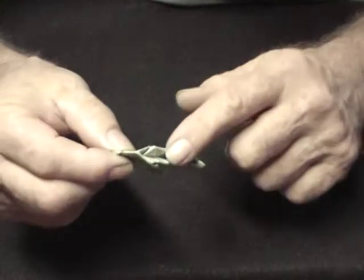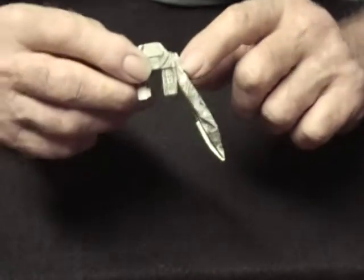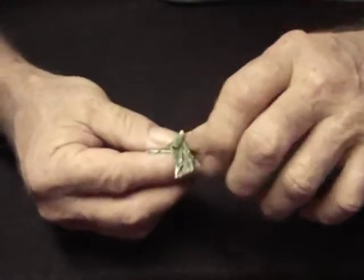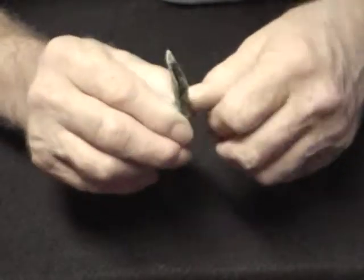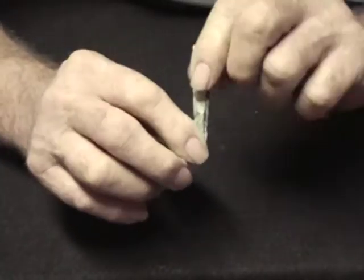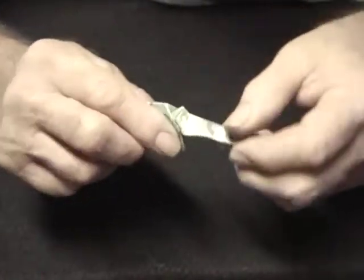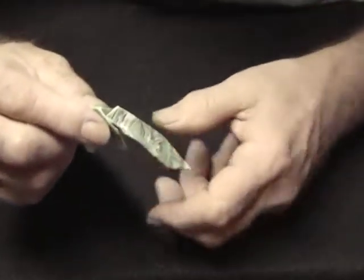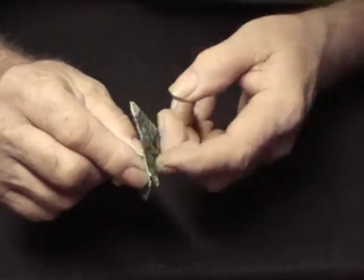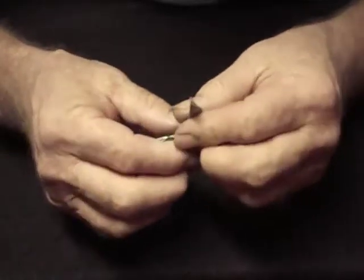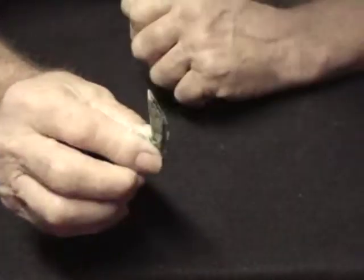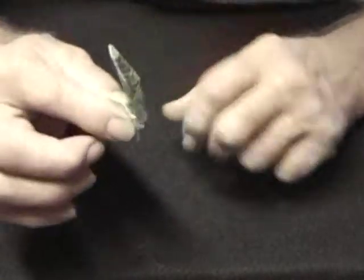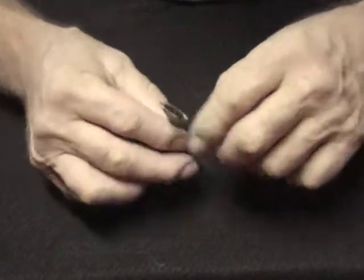Then back up here, almost to the top of the leg, you make another reverse fold going up. You can see we had a reverse fold going down all the way down, then we have a reverse fold coming all the way back up. After we get up here, we make another reverse fold right here for the head.